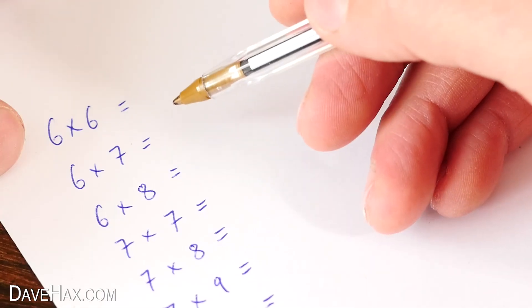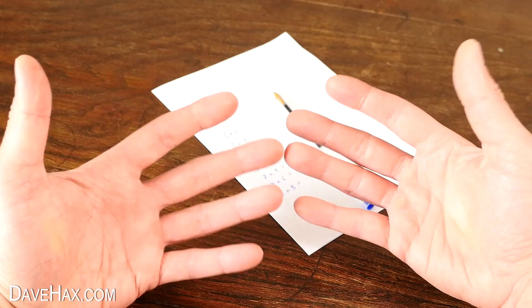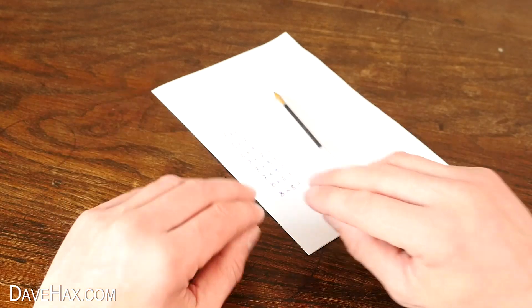Multiplying certain single-digit numbers can be tough. Today I'm going to show you how you can use your hands to help multiply numbers from 6 to 10.